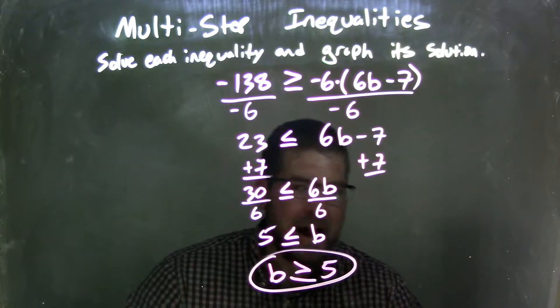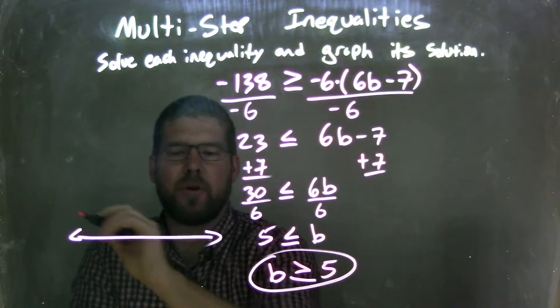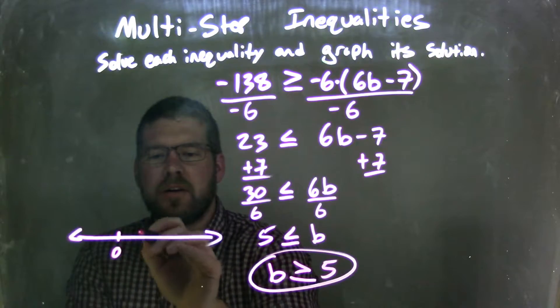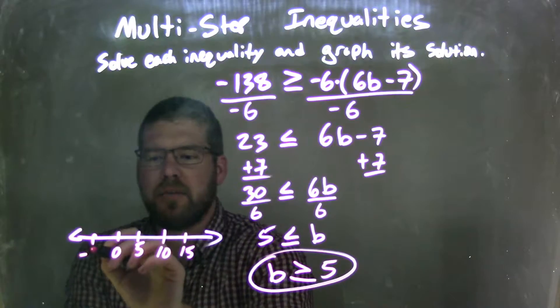So now I want to graph it. So let's put a graph right here, really quickly, a small little graph. Let's go by 5, so we have 0, 5, 10, 15, and negative 5 right here.